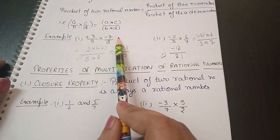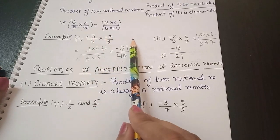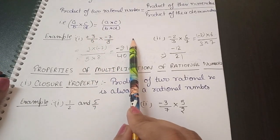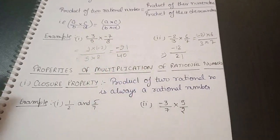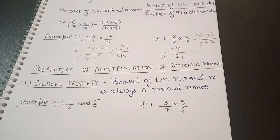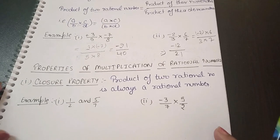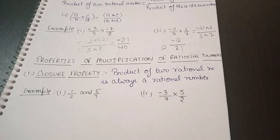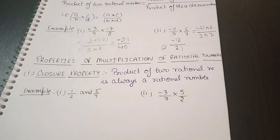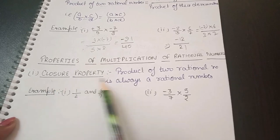So this is how we calculate the product of rational numbers — multiply all numerators together and all denominators together. Now let's move on to the properties of multiplication of rational numbers. The first property is the closure property.